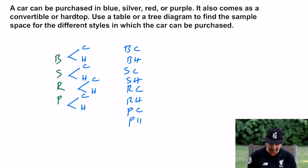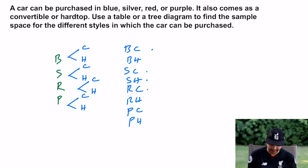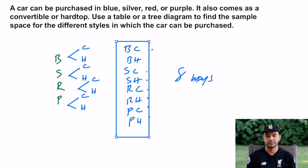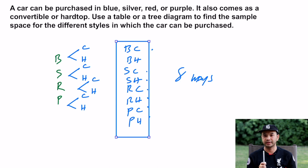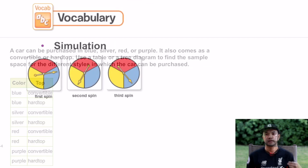As you can see, you can have blue convertible, blue hard top, silver convertible, silver hard top, red convertible, red hard top, purple convertible, and purple hard top. So there are eight ways total. That's the sample space — all the different ways you can configure a car. You might already be noticing something about this that will lead into the fundamental counting principle.